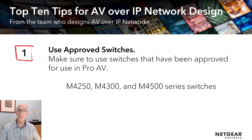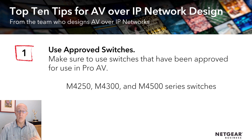Number one: use approved switches. Make sure you use switches that have been approved and built for ProAV AV over IP, like our M4250 — built from the ground up in look, feel, and operation for AV over IP — as well as our M43 and M4500 switches, which all have the abilities and often out-of-the-box functionality for working with AV over IP systems.